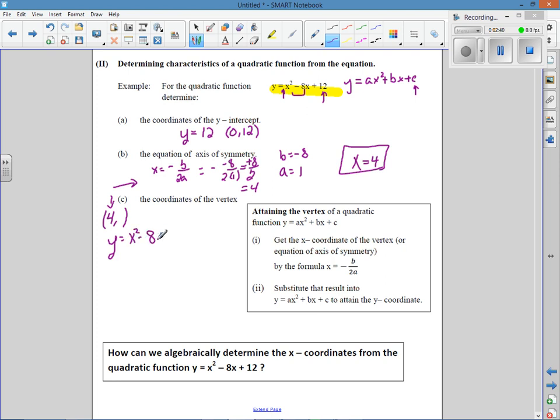So here's our equation. Now we're going to substitute the value of 4 back in. 4 squared, subtract 32, plus 12. Negative 4. So the vertex is at (4, negative 4).